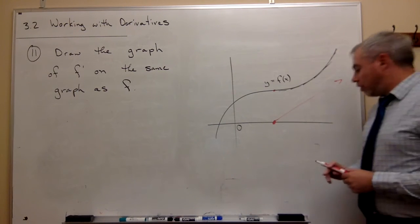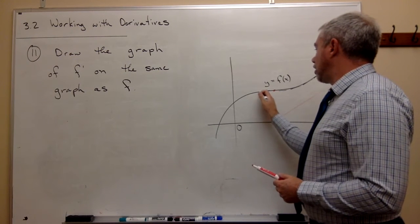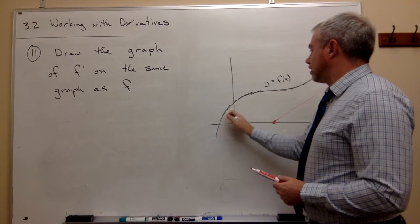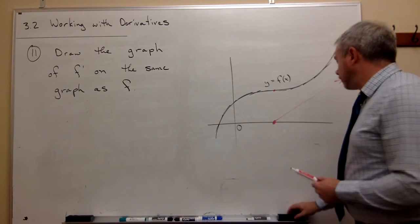So I'll draw that in in red that they're getting more and more positive as I move towards the right. Over on the other side, what's going on? These are also positive slopes and they're getting more and more positive as I move towards the right.